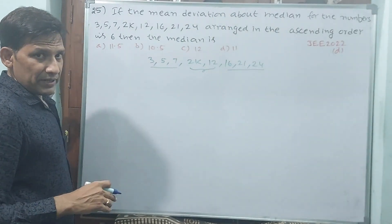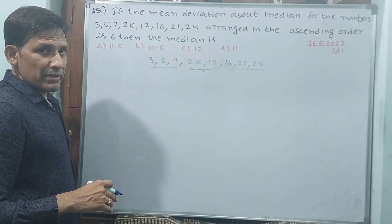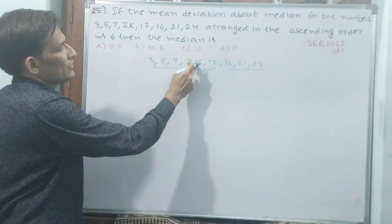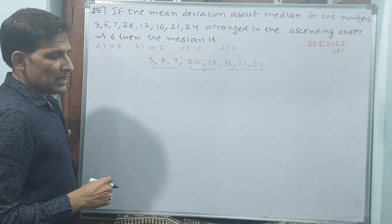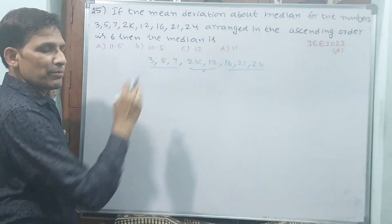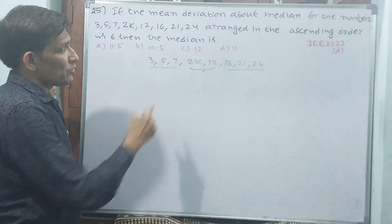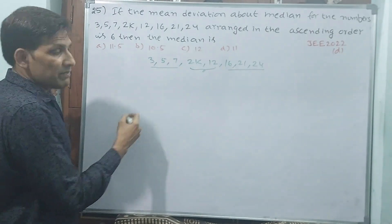Ascending order we have to take the numbers. And see, K may be even or odd, but 2K will always be an even number. That we have to accept.